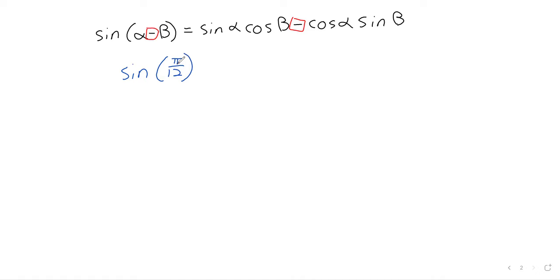Let's find a sine using this identity. With radians, it's harder to look at something and recognize that it's a sum or difference. But pi/12 is one of those classic examples, because it's the difference of two angles whose sines you know. It turns out that pi/12 equals pi/3 minus pi/4.